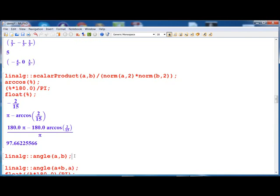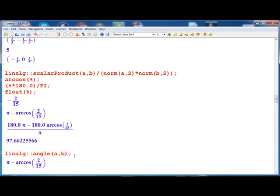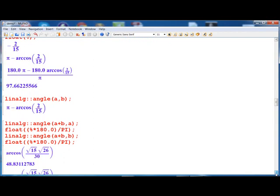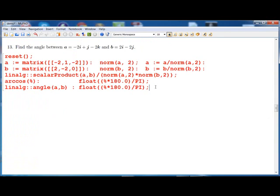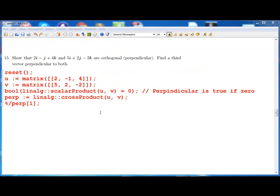This requirement to compute the angle between two vectors is so common that the linear algebra library contains a function called angle, and therefore it's easier to use than what we did before. And if we find the angle between each of the vectors and the sum of the vectors, then we'll see that the answer is approximately half of 98.